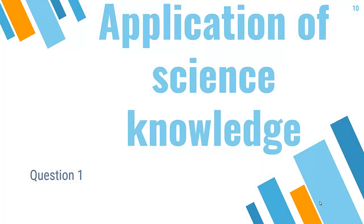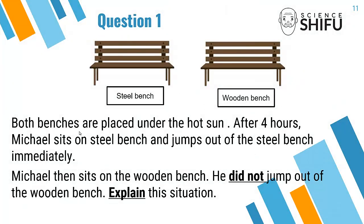Let's look at how the science knowledge is applied to Question 1. Remember, the science knowledge we just learned is good and poor conductors of heat. In Question 1, we see a diagram showing a steel bench and a wooden bench. Both benches are placed under the hot sun. After four hours, Micah sits on the steel bench and immediately jumps out — this word 'immediately' is important because it shows urgency, meaning the steel bench is too hot.